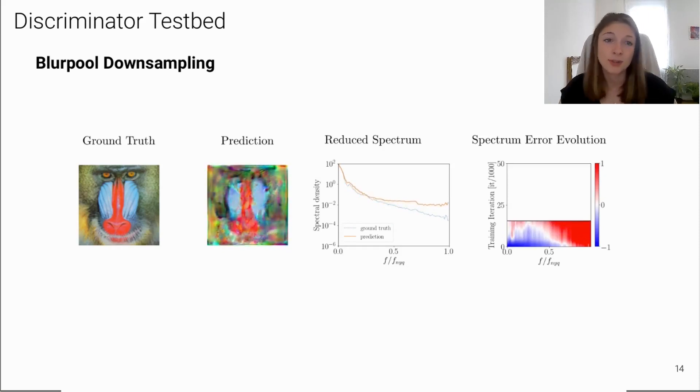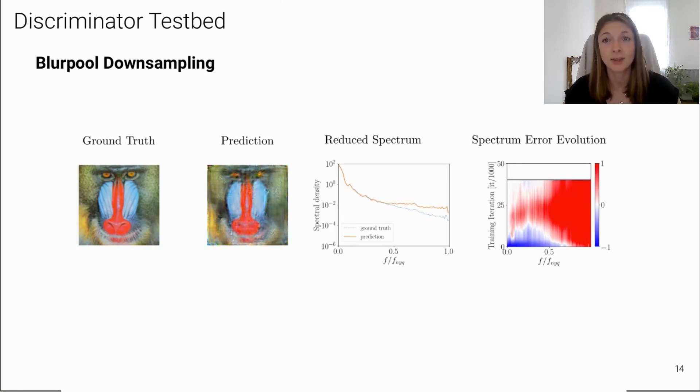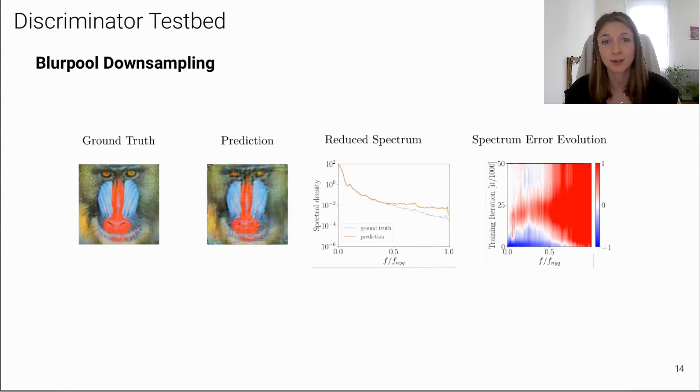So, the reduced spectrum now shows too many high frequencies. And overall, we can still see that over the course of training, the correct spectrum is not reached.